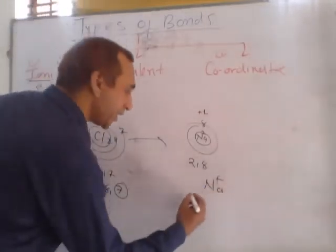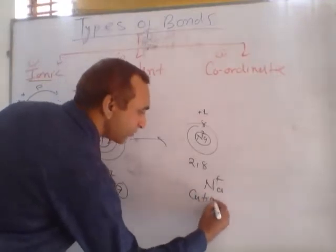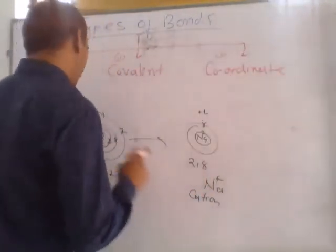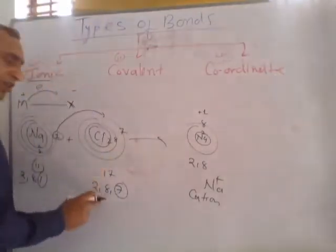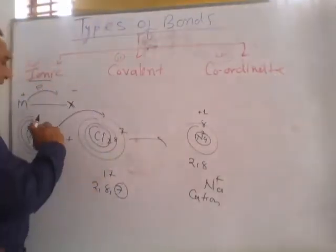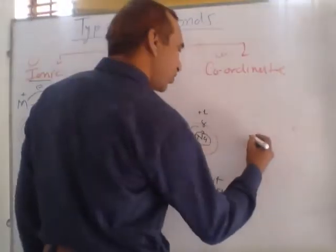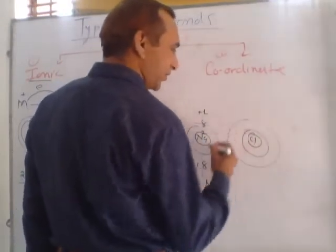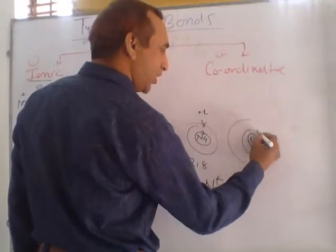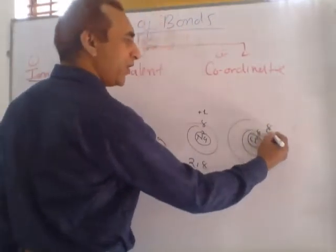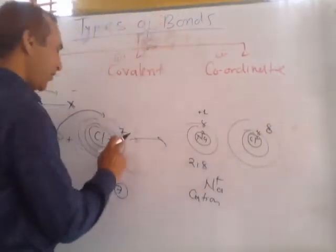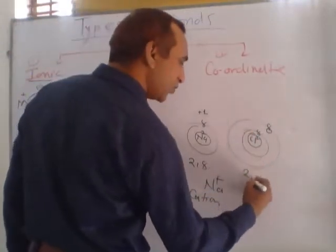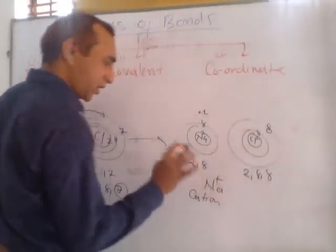Chlorine is normally 2, 8, 7. It takes 1 electron from sodium, so chlorine becomes 2, 8, 8. Now sodium has 8 electrons in its last shell and becomes stable. Chlorine also has 8 electrons and is also stable. So chlorine becomes minus 1, because it has taken 1 electron given by sodium. After the reaction, sodium becomes positive (Na+) and chlorine becomes negative (Cl−).